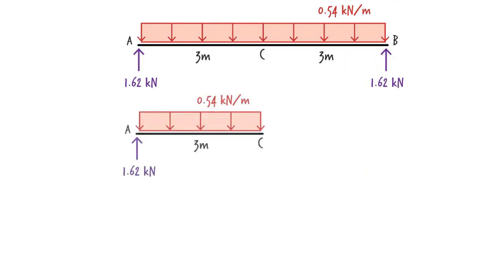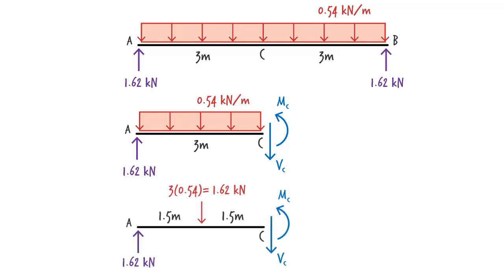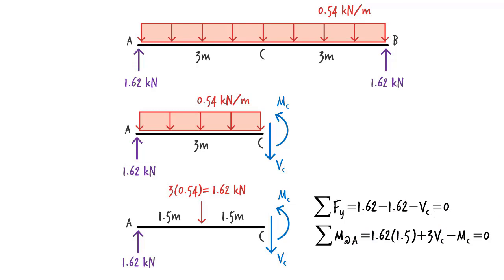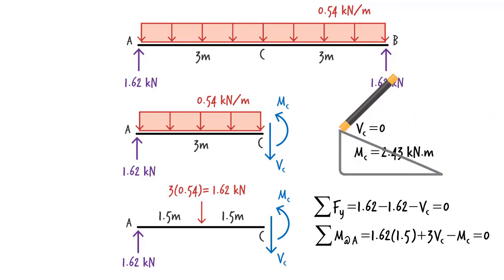To determine the shear and moment at C, we cut the beam at its midpoint and draw the free body diagram for the left segment of the beam. We denote the unknown shear force at the cut point as VC and use MC for the unknown moment. Since a distributed load appears on the free body diagram, before writing the equilibrium equations we can replace the rectangular load with its equivalent concentrated load, just as we did in the previous step. The magnitude of the concentrated load equals the area of the rectangle appearing in the free body diagram, and the load is placed at the center of the area. Now we can write the equilibrium equations. Solving these equations, we get zero for the shear force and positive 2.43 kNm for the bending moment.